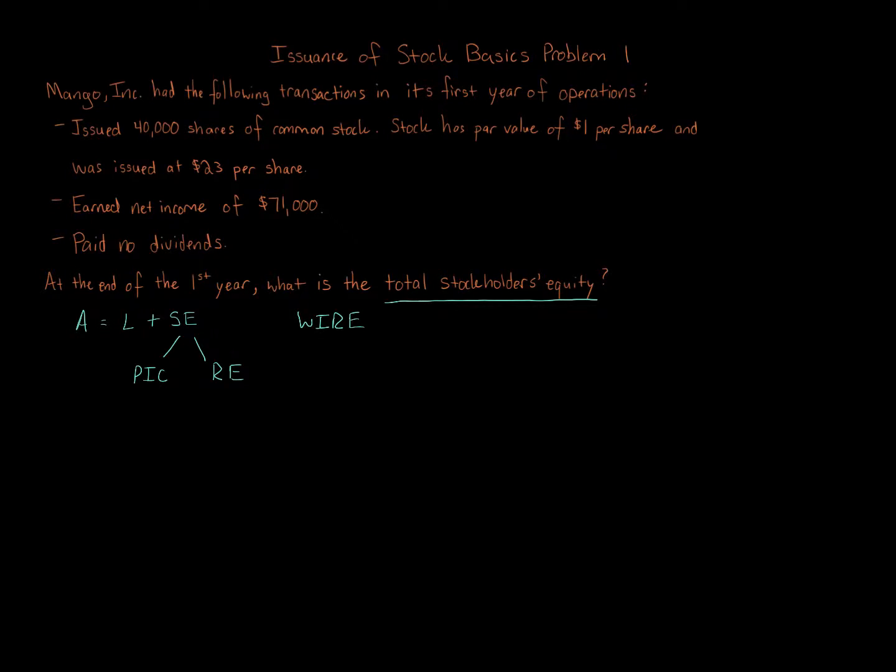This applies whether the business is a corporation, partnership, sole proprietorship, or limited liability company. WIRE is there to help guide you in understanding how to increase and decrease various things on the equity side of the balance sheet.